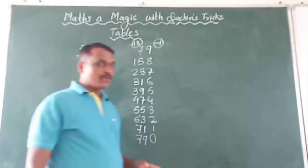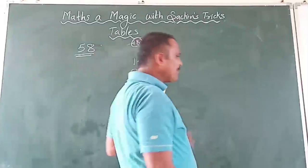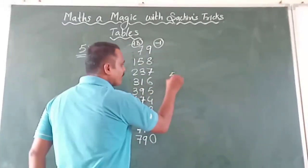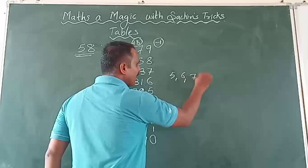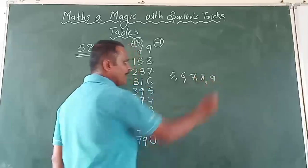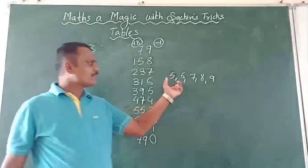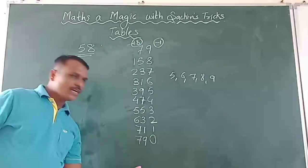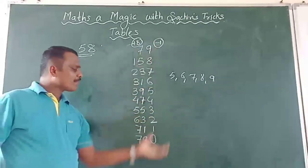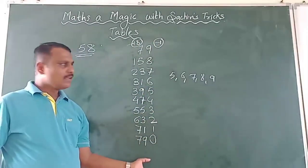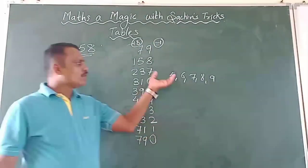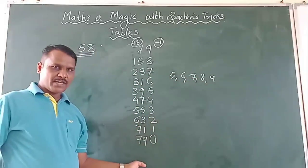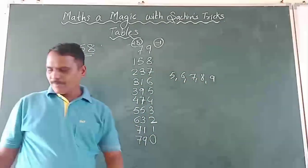I hope you have understood. Keep in mind this method is only for when we have 5, 6, 7, 8, or 9 at the unit place. If you have 5, 6, 7, 8, or 9 at the unit place, you do it in this way and you will easily get the table. Let's do one more example.